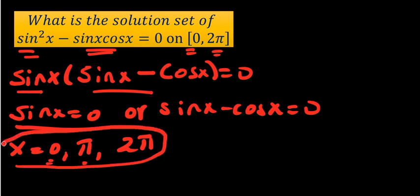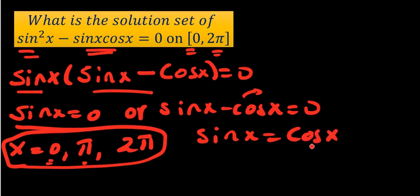Okay, let's continue and solve it. The other one, sinx - cosx = 0 means we can shift one of it to the other side. That means sinx = cosx. Sine and cosine are equal when x is equal to 45 degrees. In the first quadrant, both of them are positive. So that means x = π/4. π/4 means it's 45 degrees.